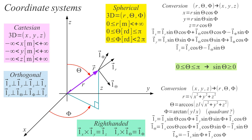Three dimensions means I have three coordinates. I can define three unit vectors pointing in the direction of the three coordinates. This symbol — 1 with a vector sign — is a unit vector: 1 means a unit vector, and x means the vector is in the direction of the x-axis. An orthogonal coordinate system has all three unit vectors orthogonal between them: 1x is orthogonal to 1y, 1y is orthogonal to 1z, and 1z is also orthogonal to 1x. It is much easier to do calculations with orthogonal unit vectors; there is no real advantage to using a non-orthogonal coordinate system.